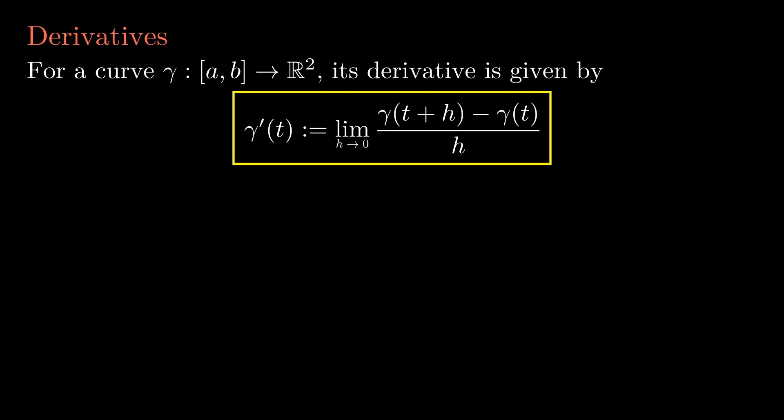One thing we should notice is that if one takes different parametrizations of the same curve, this derivative vector does not have to be the same. Imagine two distinct cars traveling along the same road. There is no reason for their velocities to be the same. However, one can easily obtain a relationship between these two velocities by applying the chain rule.